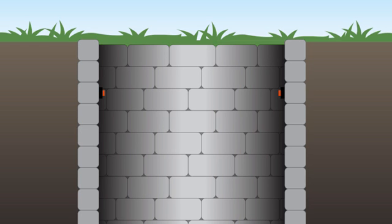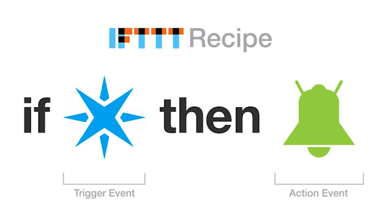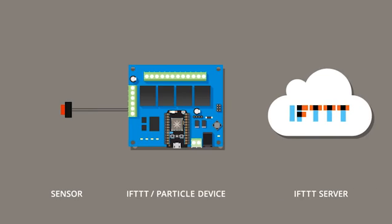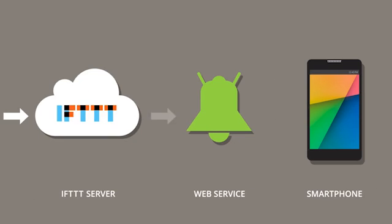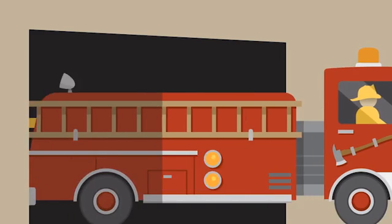Say we install a sensor at the well connected to our IFTTT device so that when Timmy falls in, it will trigger a response and send an alert to the fire chief's phone. On the IFTTT website, we will set up Particle to respond when the sensor is triggered as our If This event, and our Then That event will be the use of the Android notifications channel to send an alert to the chief's smartphone. So as the sensor is triggered, Particle sends a command to the IFTTT server which, through the Android notification channel, sends an alert to the phone — and Timmy is saved.